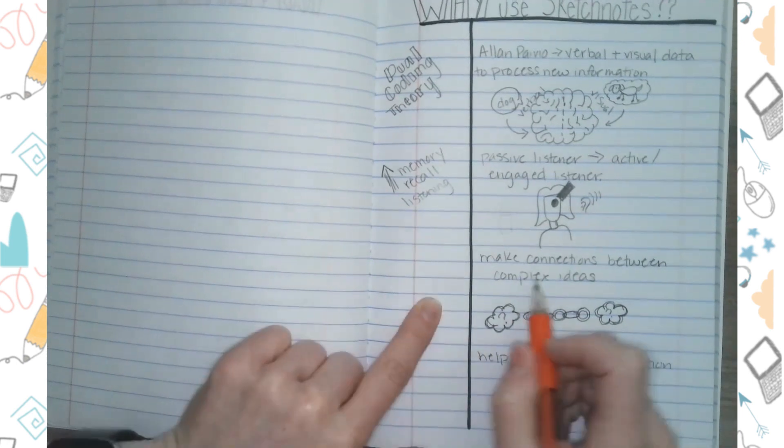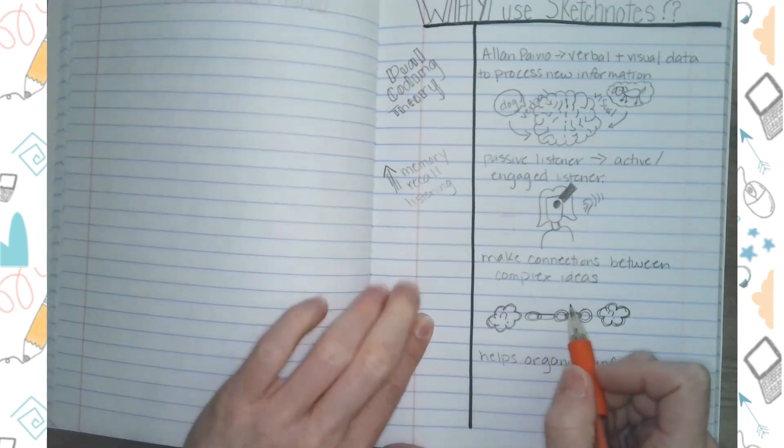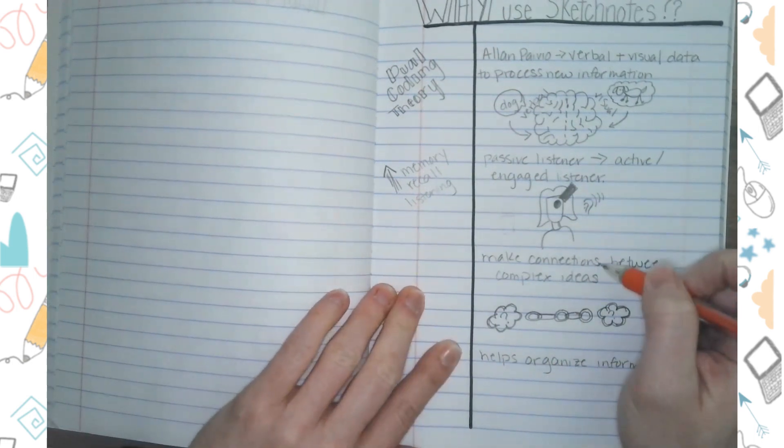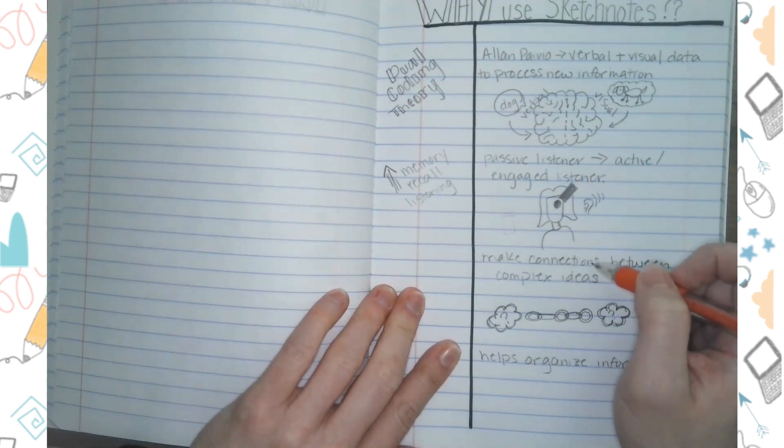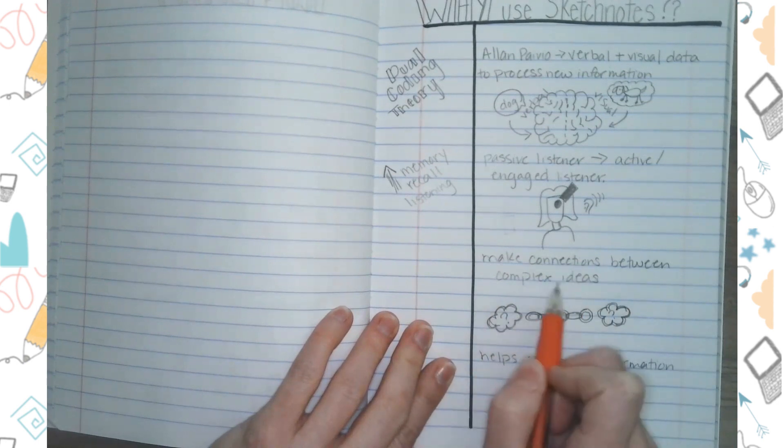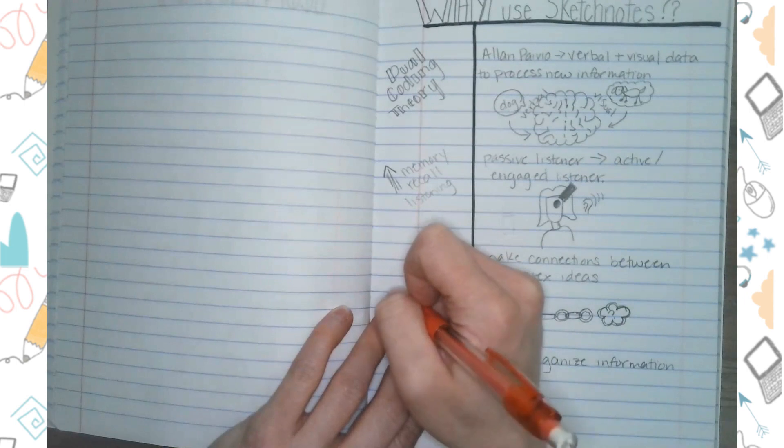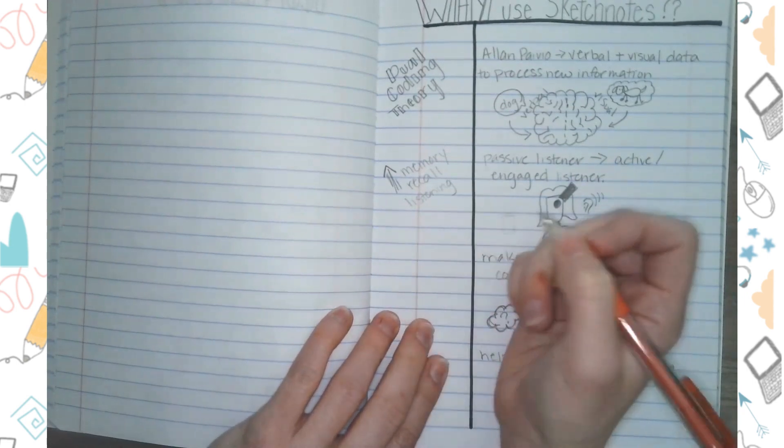So when I am making connections between two ideas, I'm actually doing something called synthesizing data. So for my key point out to the side, I am going to use the word synthesis because that's what I'm doing. I'm synthesizing whenever I'm making those connections.